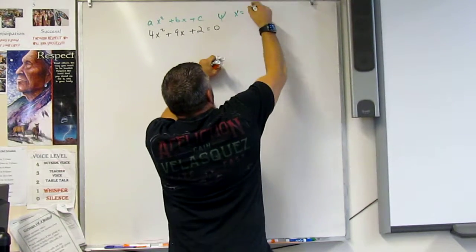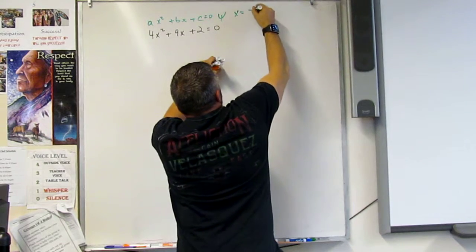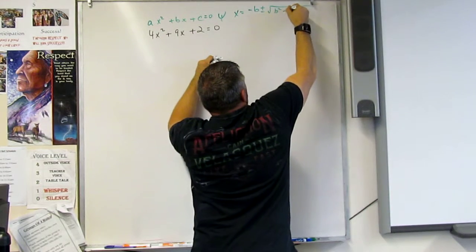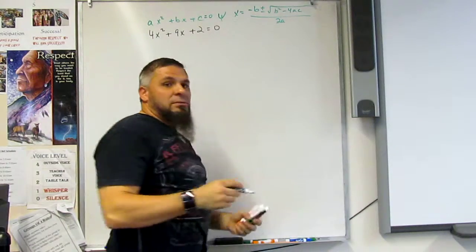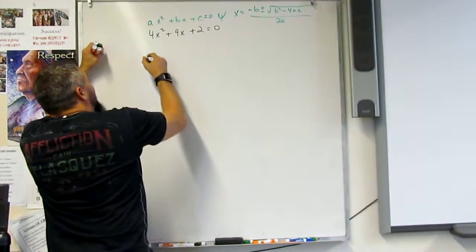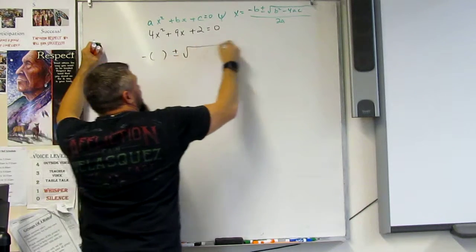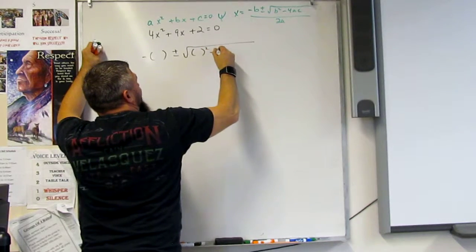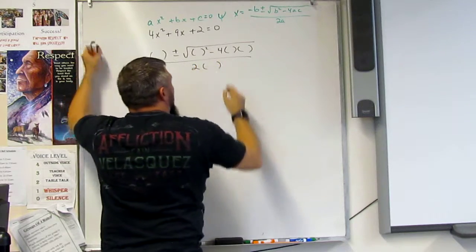So whereas, x equals, right? If this equals 0, then x equals negative b plus or minus the square root of b squared minus 4ac all over 2a. And so then we just gotta plug these things in. So I've got negative b plus or minus the square root of b squared minus 4ac all over 2a, right?